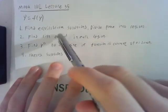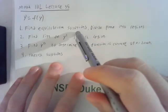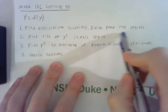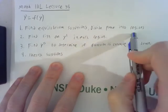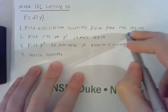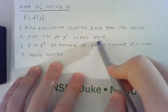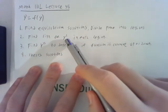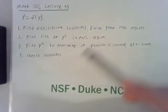First we find equilibrium solutions which remember are the solutions where y prime is equal to zero, so y is not changing. And we'll see in a minute that these equilibrium solutions are horizontal lines. They divide the plane into several regions. And inside each region, the sign of y prime does not change, so we can determine in each region are the solutions increasing or decreasing.